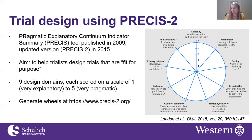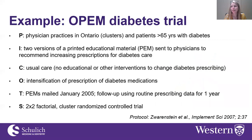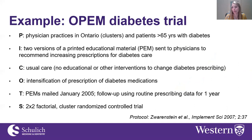On the PRECIS-2 website at PRECIS2.org, you can input the trial information for each of the nine design domains and a wheel will be generated for you. In the next few slides, I'm going to go through each of the nine design domains in detail using a large cluster randomized trial as an example — the Ontario Printed Educational Materials Diabetes trial, conducted a number of years ago in Ontario, Canada.